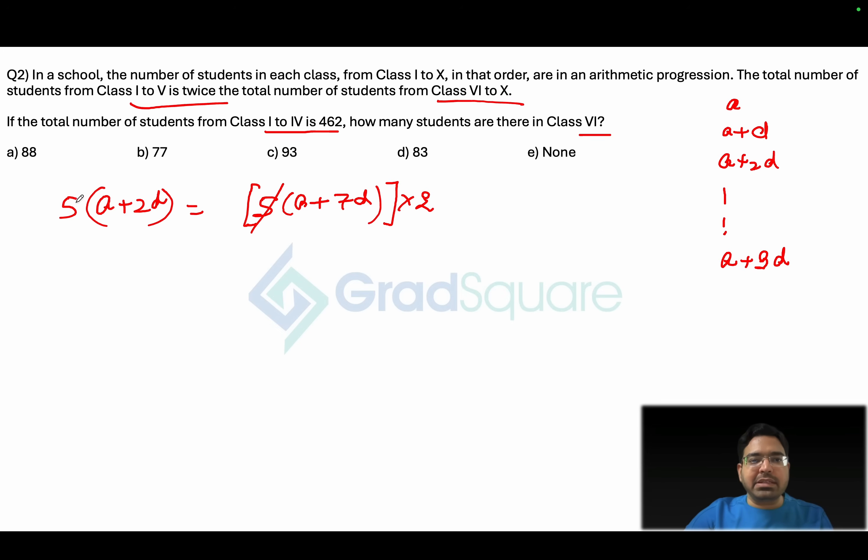Now when we solve this particular piece, 5 will get cancelled out. It will become a plus 2d equals 2a plus 14d, and if you go a little further you will realize a will become equals to minus 12d. Now this very clearly indicates that the common difference will be negative and the number of students are reducing from class 1 to class 10.